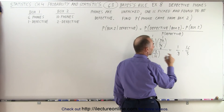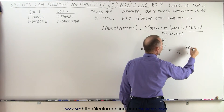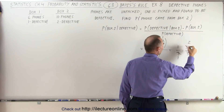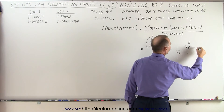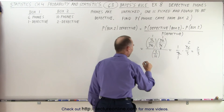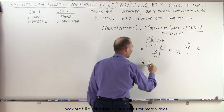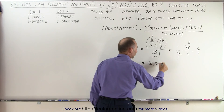Here we have eight and sixteen — that's two and one. So that gives us a probability of two-thirds, which is equal to sixty-six point seven percent.